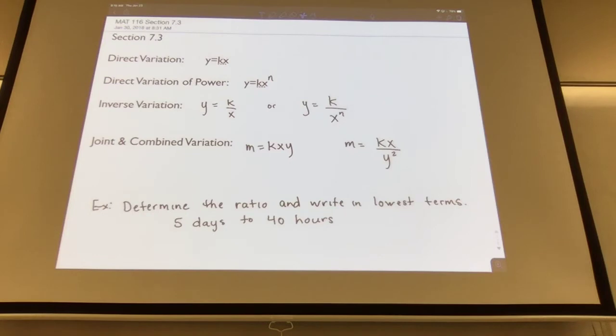For direct variation, it's directly related, so they're just multiplied. The x is multiplied times the constant k. When we have a power, we have x to the power. For the inverse variation, it's inversely related, meaning it's like division. Direct was like multiplication. If it's an inverse with a power, then you have inverse and then you also have a power involved.